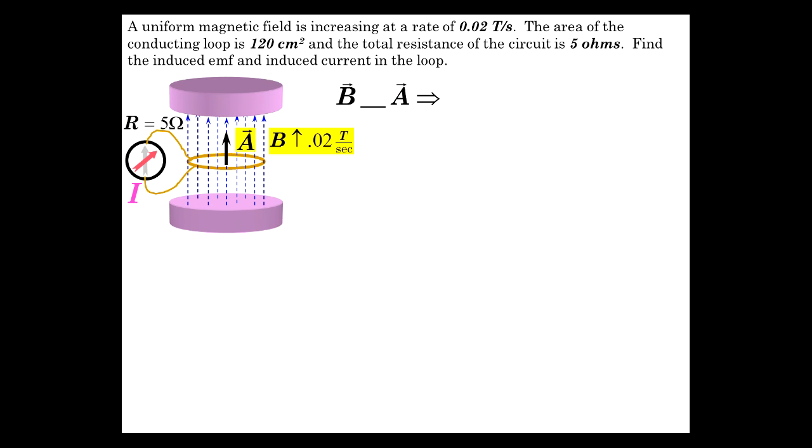First of all, the area. There it is. And B is parallel to the area vector. So this is A vector, area vector, not just A vector. Not any old A vector, but the area vector.